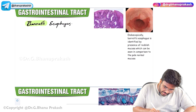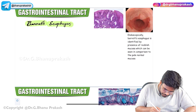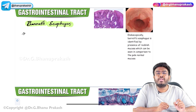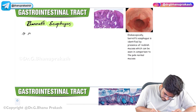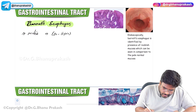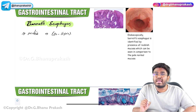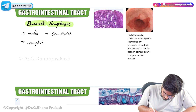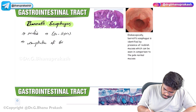So what exactly is Barrett's esophagus? Barrett's esophagus is mainly seen in males, in the age group of 30 to 50 years. Barrett's esophagus is a complication of GERD — gastroesophageal reflux disease.